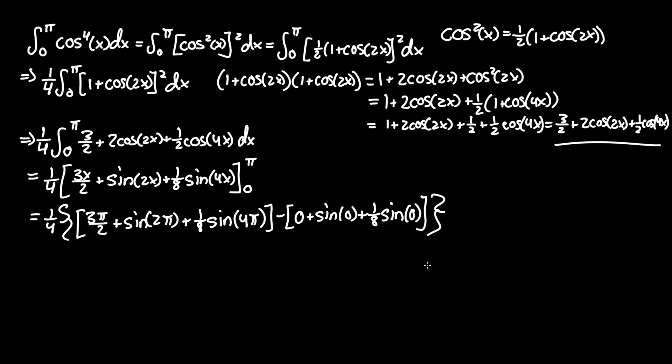From the unit circle, we know that sin(0) or sin(πn) will always yield 0. So the lower bound is effectively 0.